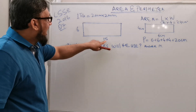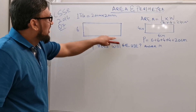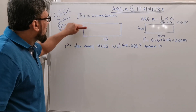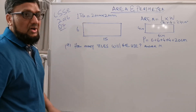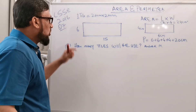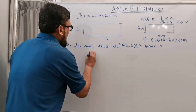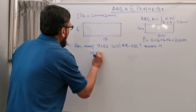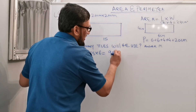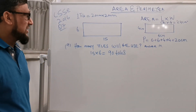We know he is using 15 tiles for the length and 6 tiles for the width. So the total number of tiles is 15 times 6, which equals 90 tiles.